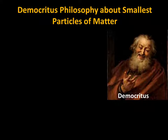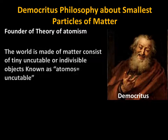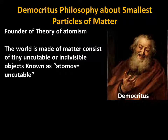The history of the atom begins about 2500 years ago with the Greek philosopher known as Democritus. He proposed a philosophy about the smallest particle of matter, known as the theory of atomism. Democritus is considered the founder of the theory of atomism. According to him, the world is made of matter.